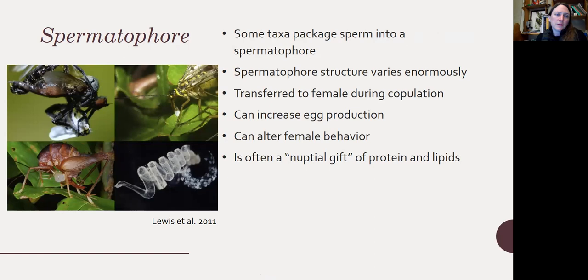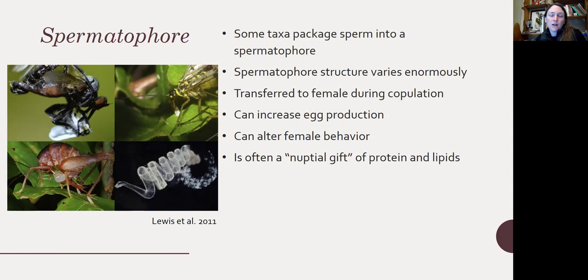The spermatophore: some insects package up the sperm in a nutritious jelly mass. The structures of spermatophores vary enormously. The spermatophore and the sperm are transferred to the female during copulation, and parts of the spermatophore can serve certain functions — hormones in the spermatophore can induce the female to produce more eggs or alter her behaviors. They're often thought of as a nuptial gift of proteins and lipids, and often the female will eat the spermatophore. Other nuptial gifts include males providing a prey item during copulation.